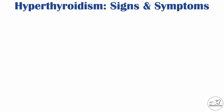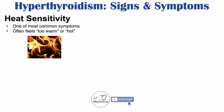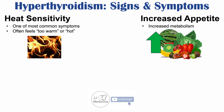One of the first symptoms noted with hyperthyroidism is heat sensitivity or heat hypersensitivity — a sensation of feeling too warm or hot, an inability to tolerate heat. Another symptom is increased appetite, which is due to increased metabolism. Higher thyroid hormones lead to increased metabolism, causing increased appetite.